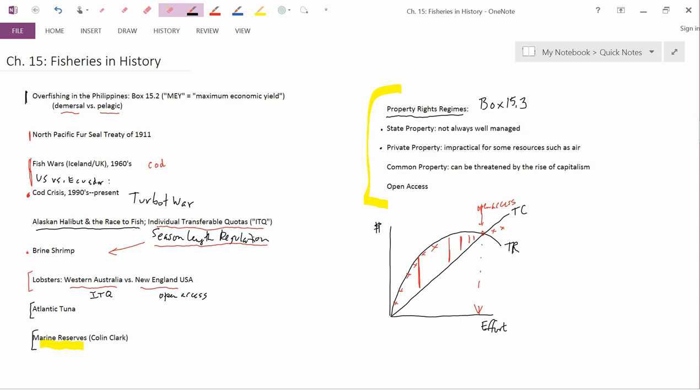So unsurprisingly, the condition of the lobster industry is a lot better off the coast of Maryland because you have private property. Now, I wrote here private property is impractical for some resources, such as the air we breathe. You can't always turn things into private property. But when you can, then you do avoid open access problems. We'll get to open access in a moment.